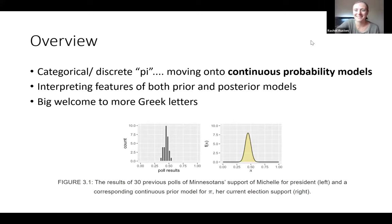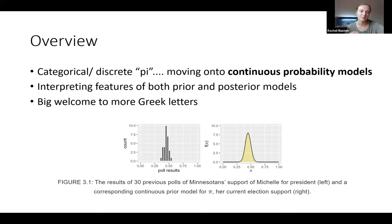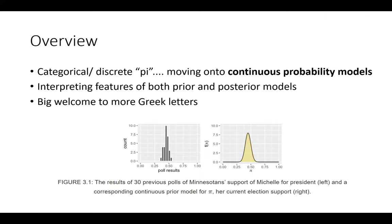Okay, so Chapter 3 — this is what I've got so far. We're moving on from the categorical real/fake soda pop stuff to more continuous, which reflects more reality. That's probably what we'll all be doing if we take Bayesian into our futures. A goal I had was just being able to interpret what's going on between the prior and posterior, and we're welcoming more Greek letters — big welcome to alpha and beta.